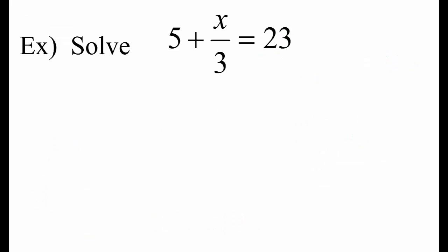Here's another two-step equation. The first thing we're going to undo is the 5, so we'll subtract 5 on both sides. 5 minus 5 is 0, that leaves us with x over 3 on the left side. 23 minus 5 equals 18. Now we have x over 3, or x divided by 3, equals 18, so we need to undo divide by 3.